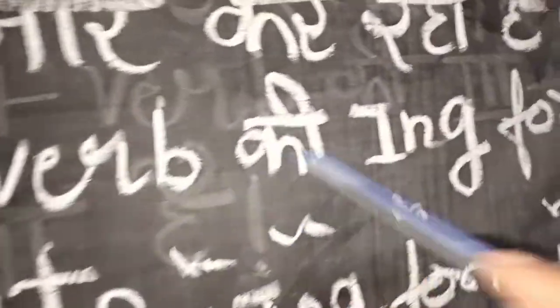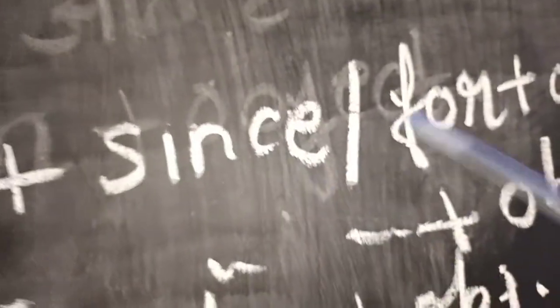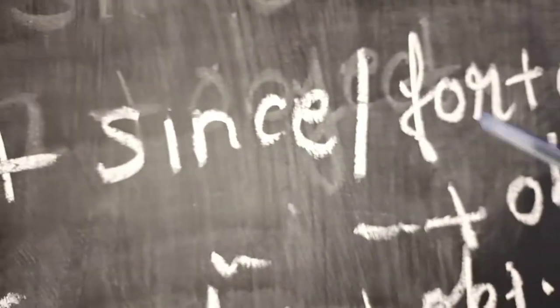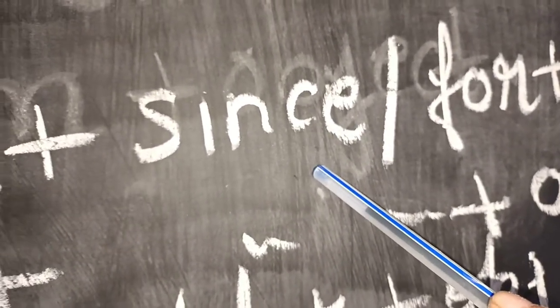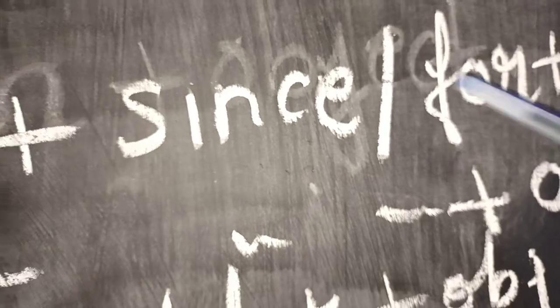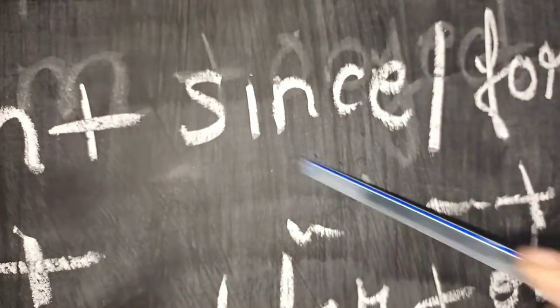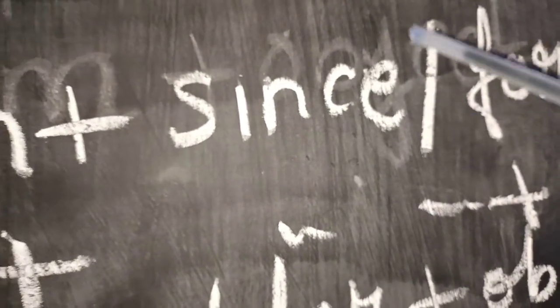then verb plus ing and then either since or for. In both of these prepositions, you have to add either since or for. Since, where do you have to use? Since shows you the exact time,